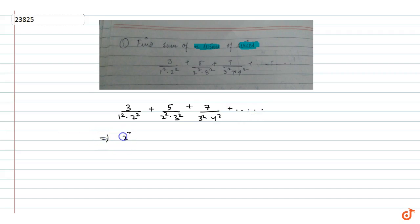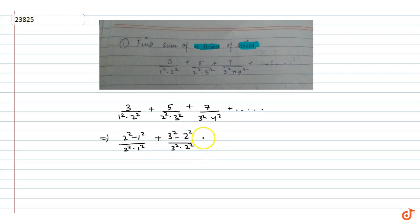We can rewrite this as: 2 square minus 1 square upon 2 square into 1 square, plus 3 square minus 2 square upon 3 square into 2 square, plus 4 square minus 3 square upon 4 square into 3 square, and so on.